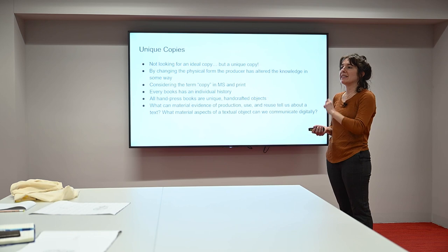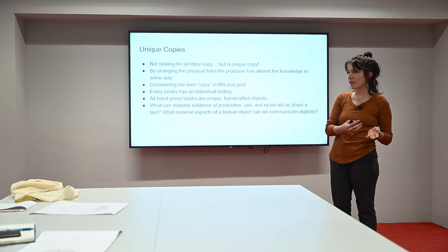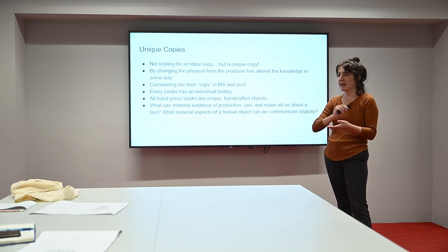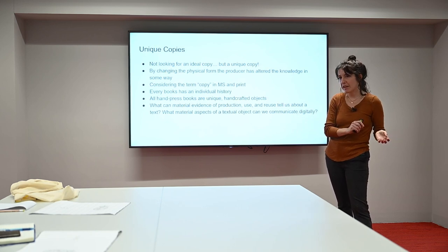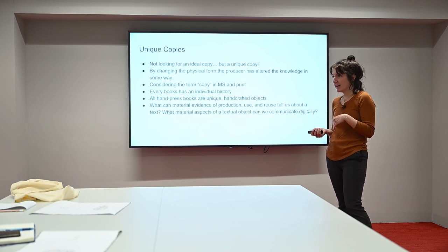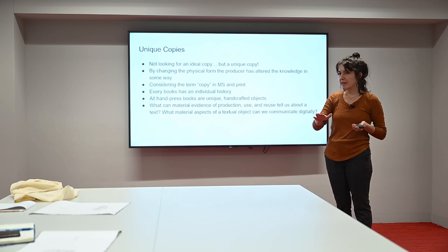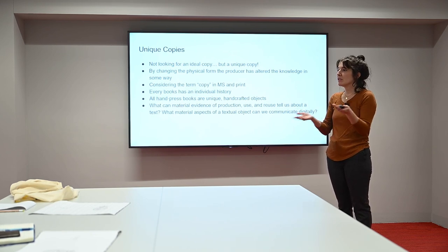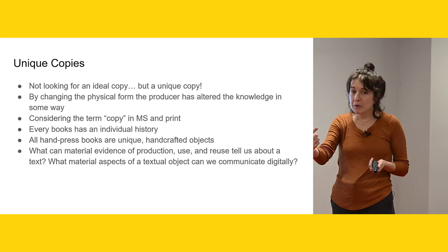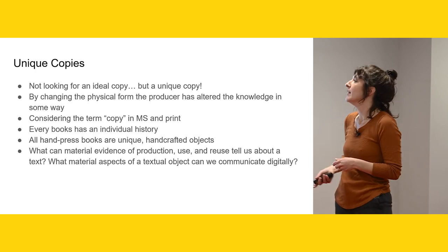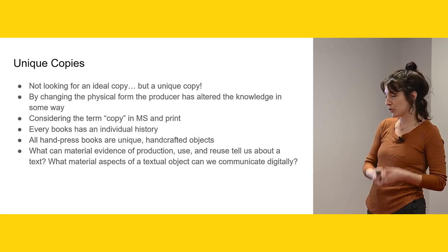When we're talking about scribal copying in manuscripts, everyone innately thinks: I copied it, it's in different handwriting, I probably changed something by accident — it's going to be different from whatever I copied it from. The same is true of print. Think about photocopying an image: you photocopy it and then photocopy it again. Are those two pieces of paper going to be the same? Every time you photocopy it, there are changes to the materiality. Thus every book has an individual history, and that's what we're trying to get at when describing the materiality of a text.